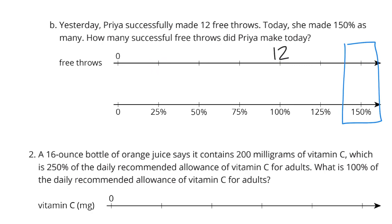Once again, it takes us 1, 2, 3, 4 spaces to get to 12. And if we take 12 and divide it by those 4, that's going to mean each of these 25% is represented by 3 free throws. And so 3, 6, 9, 12, adding up 3 each time, 15, then 18.